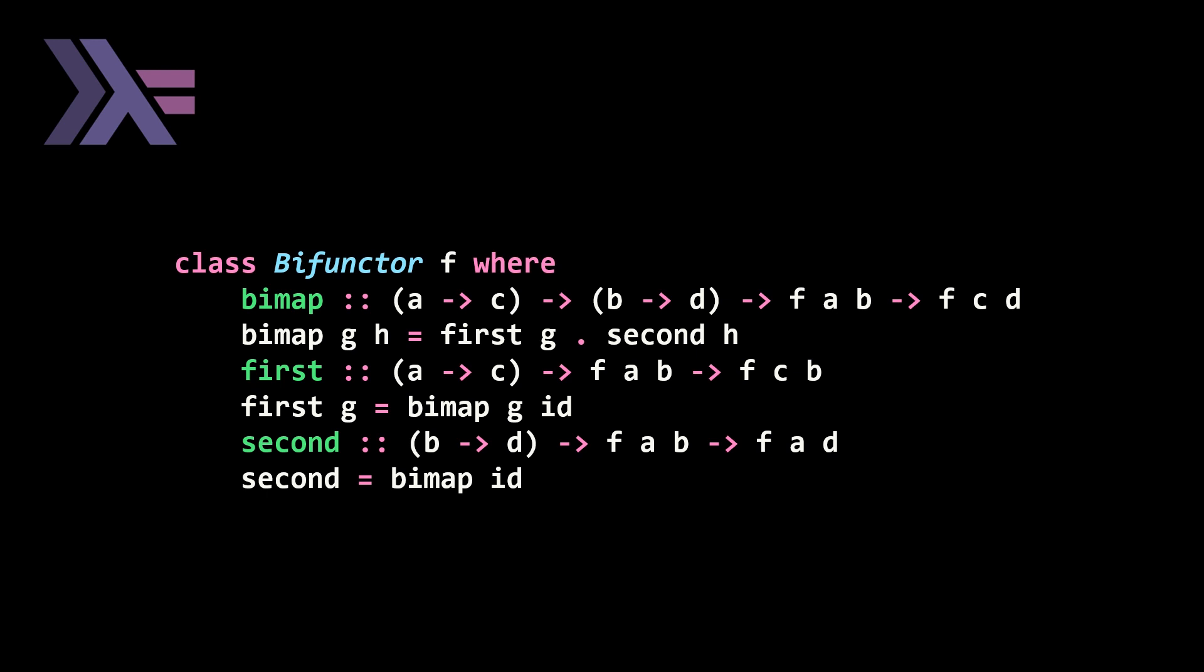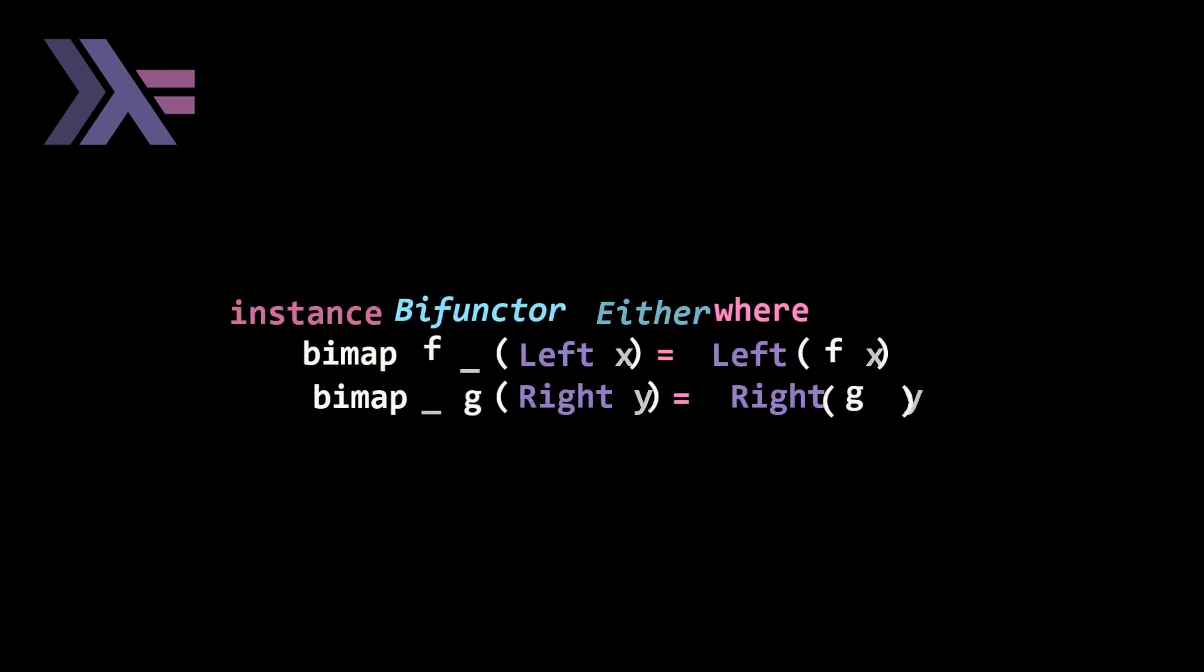So if we take a look at the code that is presented in the text for bifunctor, it is basically a type class where we have three different functions: bimap, first and second. And you actually only need to specify bimap and then first and second can be derived, or you can vice versa specify first and second and then bimap can be derived.